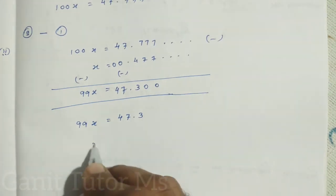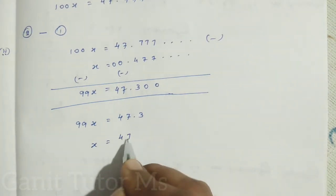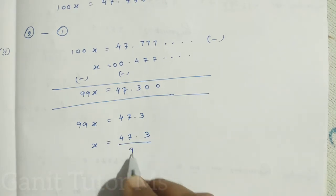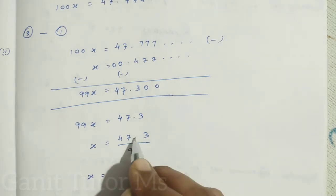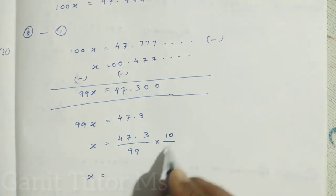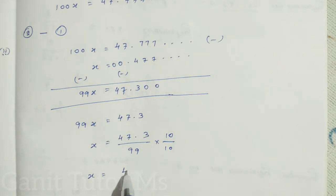So I can remove the 0s. Here, 99X is equal to 47.3. So X is equal to 47.3 divided by 99. Again, it is a decimal one. So I want to make this a whole number. So I can multiply, here one decimal. So I can multiply 10 on numerator as well as denominator. So 473 divided by 990.